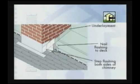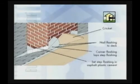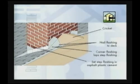Interlace the step flashing with shingles and set the step flashing in asphalt plastic cement. Extend the step flashing up the chimney and around the corner. Nail the corner flashing to the deck and cricket.